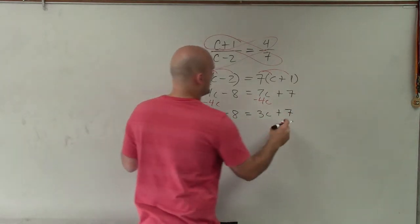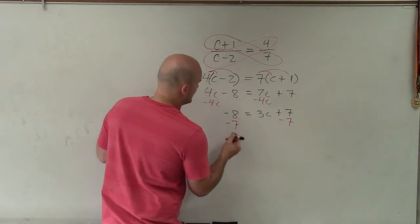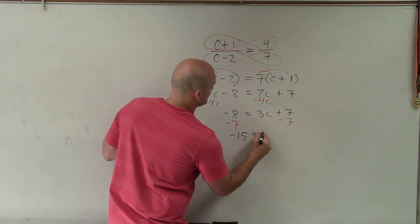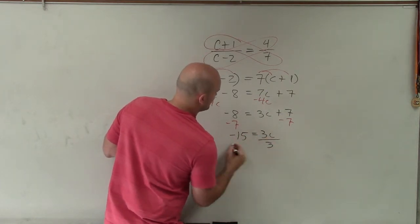Then to get the c by itself, I will subtract 7 on both sides. And you can see I have negative 15 equals 3c, divide by 3, divide by 3, and negative 5 equals c.